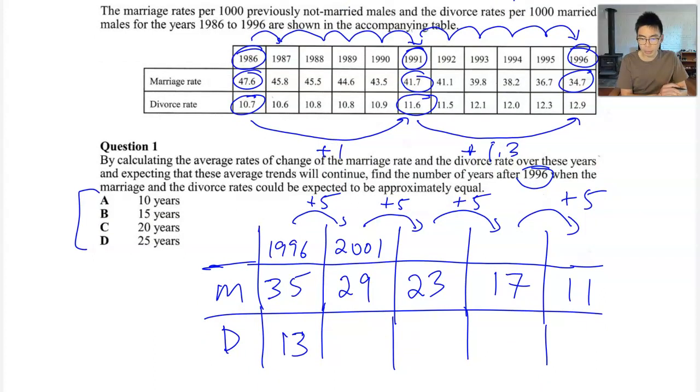Now with the divorce rate, what happens when we go five years in advance? It actually goes up by about one. So let's say it goes up by 13. So from 13, I should say, to 14, 15, 16, 17. Now this is relatively straightforward to do. All we are doing is adding or taking away a similar amount every time we are kind of skipping ahead five years.